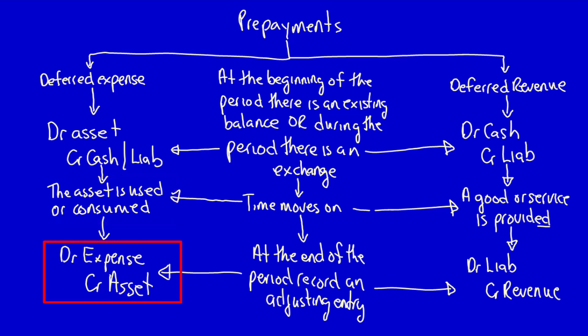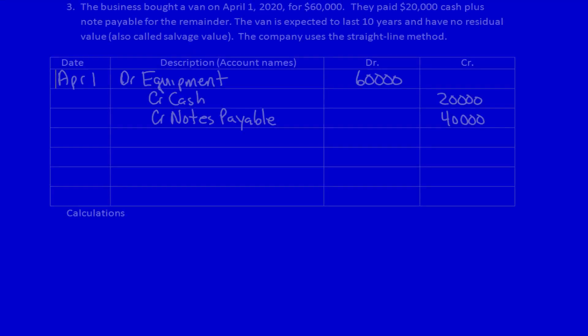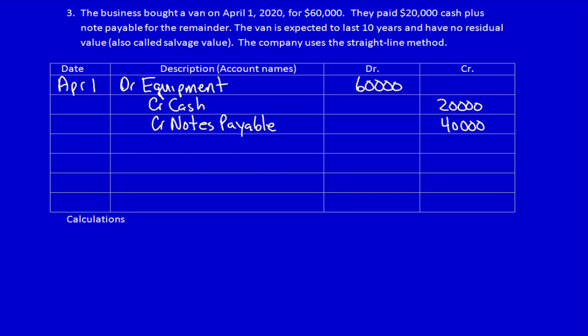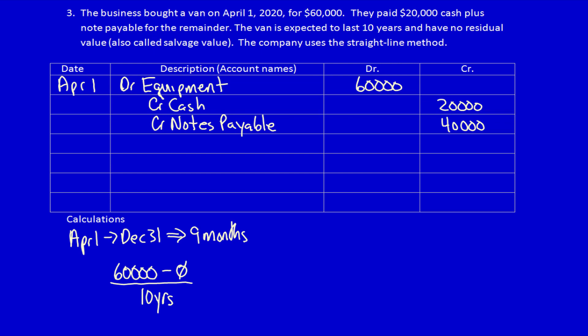As time moves forward to December 31st, the asset is used to help generate revenue, so we have to recognize an expense and a reduction in the asset. Let's calculate the value used or consumed between April 1st and December 31st — that's 9 months: April, May, June, July, August, September, October, November, December. Using the straight-line method: ($60,000 minus residual value of $0) divided by estimated useful life of 10 years, then multiplied by 9 months divided by 12. The value consumed during this period is $4,500.